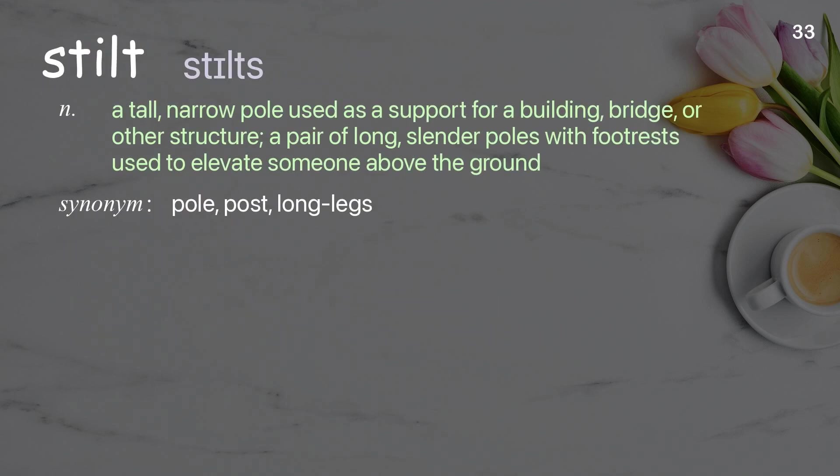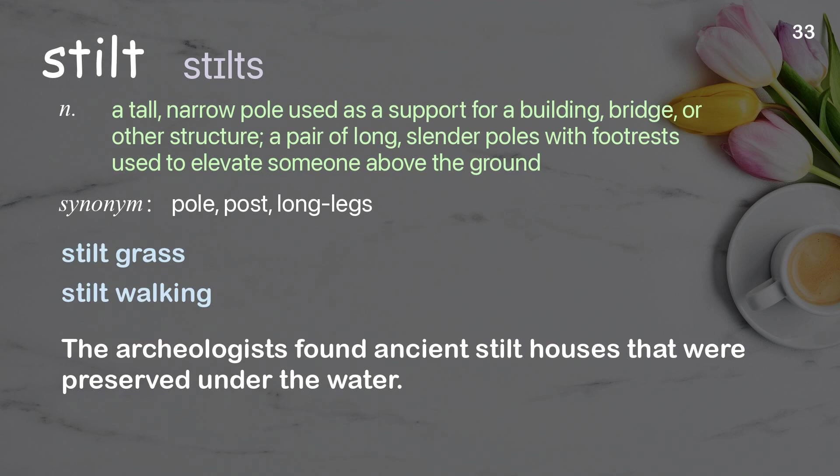Stilt — a tall, narrow pole used as a support for a building, bridge, or other structure; also a pair of long, slender poles with footrests used to elevate someone above the ground. Examples: stilt grass, stilt walking. The archaeologists found ancient stilt houses that were preserved under the water.